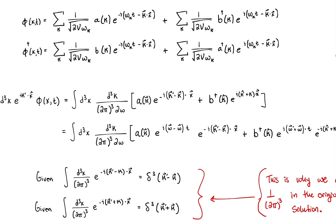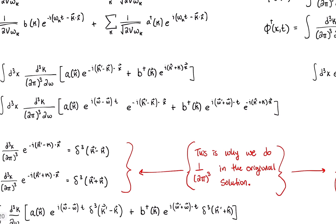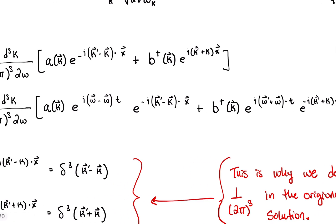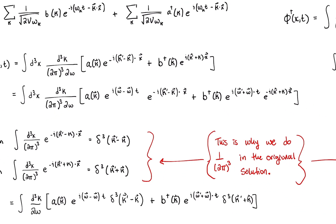Now we're separating the time and spatial components from each other, because the time and spatial components are going to have different signs from one another — we've seen that in the past. We take out the temporal component, which really just means changing the sign. The same thing applies to the other term. So this step is basically factoring out our temporal component.